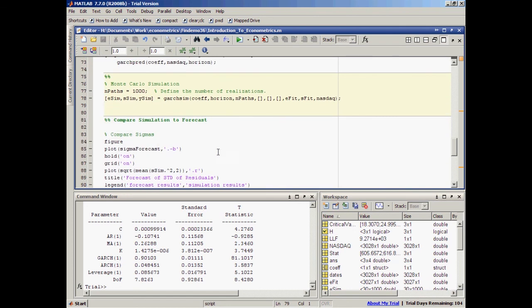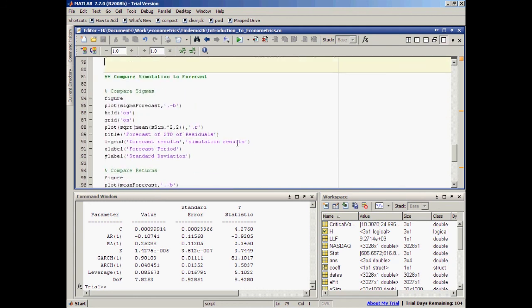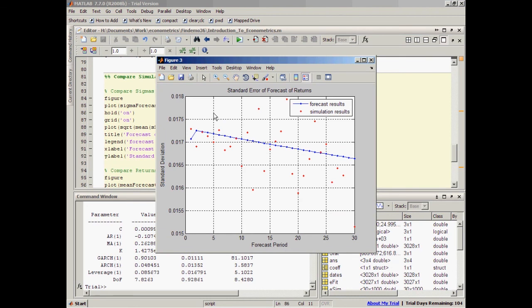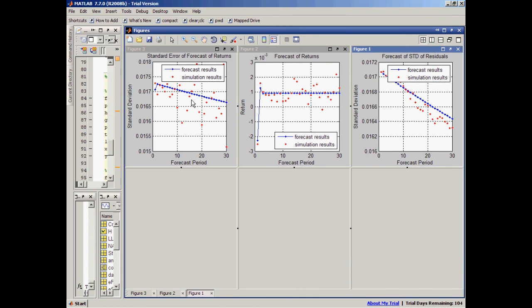And here at the end, I'll compare the simulation results to forecast. So, I will calculate the averages for the different simulations, simulation realizations, and compare them to the result of the forecasting function, garchpred. Okay, I will dock these figures into MATLAB figures window. Well, I would like to see all of them together. So, here they are. Here you can see the red dots are the simulation results. 30 dots for 30 time periods, compared to the forecast results.